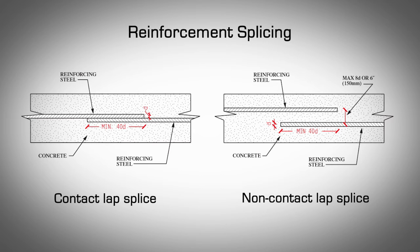Types of Lap Splice. For the purpose and scope of this manual, we will only discuss one type of splicing, known as lap splicing. Lap splicing is typically overlapping reinforcing steel over a certain length. There are two main types: Contact lap splice, where the lapped reinforcing bars must be in contact with each other and secured together; and non-contact lap splice, where the reinforcing bars are allowed to be spaced at a distance of one-fifth of the lapped length to a maximum of 150 millimeters or six inches.